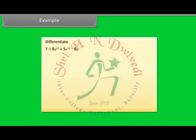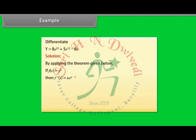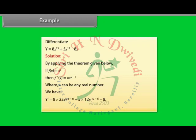Example: Differentiate y = 8x²³ + 5x¹² − 8x. Solution: By applying the theorem that if f(x) = x^n then f′(x) = n·x^(n−1), we have y′ = 8×23·x²² + 5×12·x¹¹ − 8, which gives y′ = 184x²² + 60x¹¹ − 8.